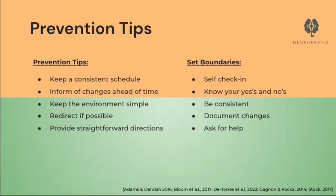Set boundaries ahead of time of what you will accept or not accept, but consistently stand by those boundaries. Check in with yourself before you sense you are approaching your physical or emotional limits. If you're feeling at your limit, ask for or seek help from professionals or family members. Reiterate your boundaries and stick by them — it is okay to say no to protect your own mental health. Remember that consistency is key. Schedule some weekly self-care even if it's only five minutes a day. Document any changes in behavior or patterns you've seen and share them with your loved one's care team so they can come up with helpful strategies or interventions.